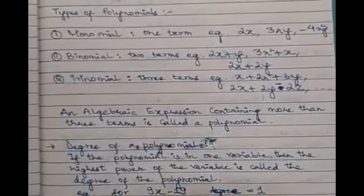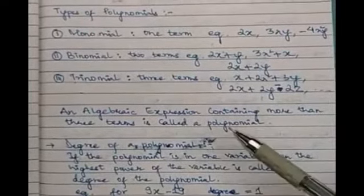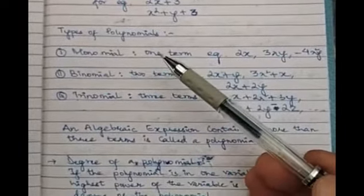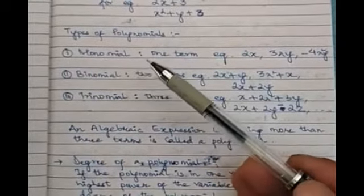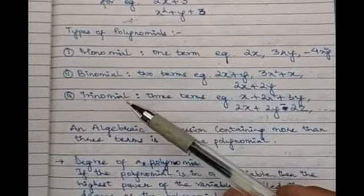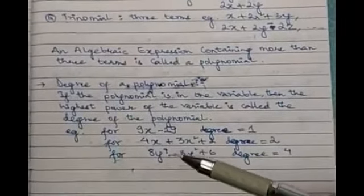An algebraic expression containing more than three terms is called a polynomial. However, monomial, binomial, and trinomial all come under polynomials — they just have specific names for one, two, and three terms respectively. For four or more terms, the expression is again called a polynomial.